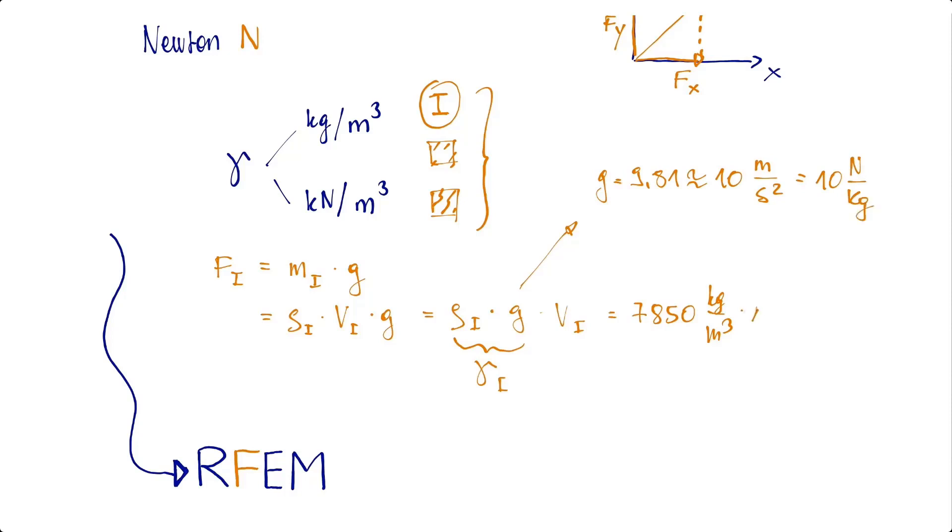If we continue to use it in the formula, this simplification results in a weight density of 78,500 newtons per cubic meter.